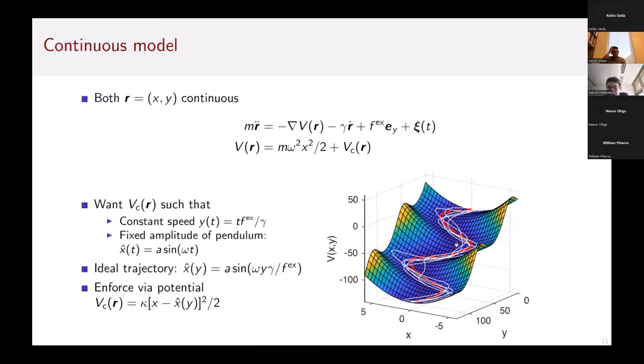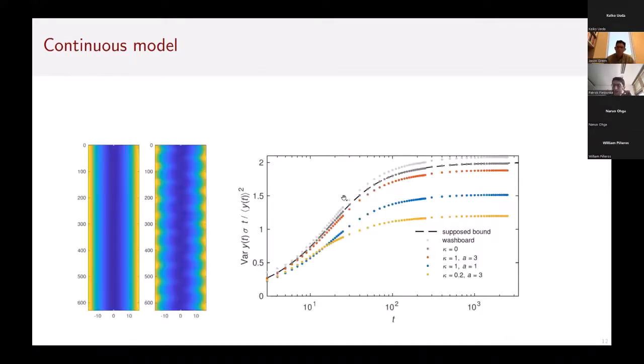If I impose that this amplitude is just A times the sine function of ω times t, then I get an ideal trajectory shown here in red which has some period determined by the external force. I would like to enforce the motion along this ideal trajectory by using some potential that penalizes deviations from the ideal trajectory.